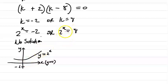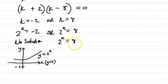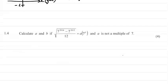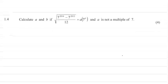So let's solve 2 to the x equals 8. We can write 8 as 2 cubed, so 2 to the x equals 2 to the power 3, therefore x equals 3. That's our solution. Let's look at one more question in part one of this video series on algebra questions.